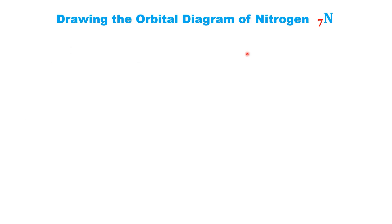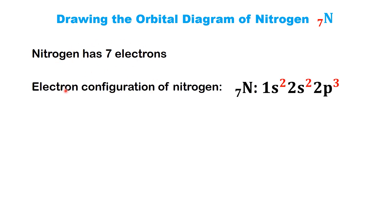Now, let's go through a few examples together to see how this works in practice. Let's start with nitrogen. Nitrogen has an atomic number of seven, which means it has seven electrons. To draw its orbital diagram, the first thing we need to do is figure out its electron configuration. If you're not sure about electron configurations, don't worry. We've already covered that in a separate video, so feel free to check it out.